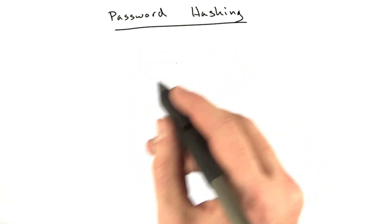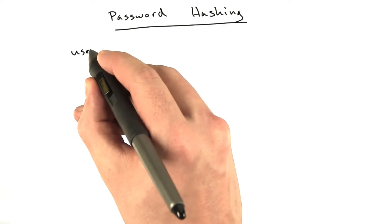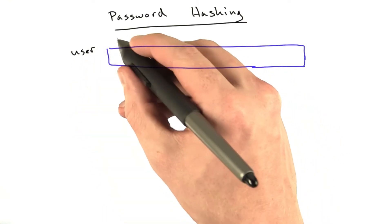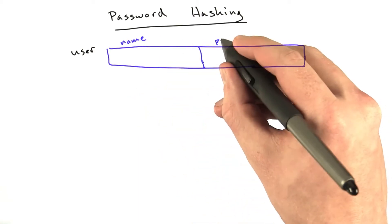Let's talk about using passwords for hashing. Say we have a table for users in our database, and this table has a couple columns. One column is for the user's name, and another column is for the user's password.